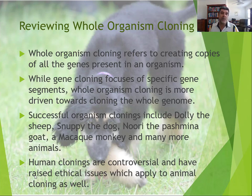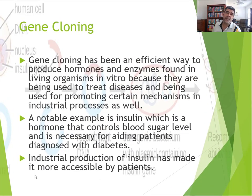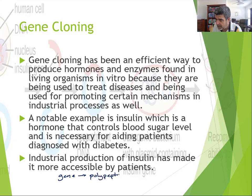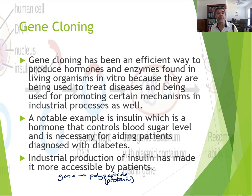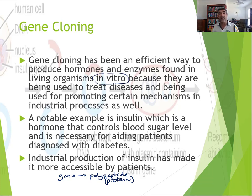In this video, we're going to contrast what we know about whole organism cloning with gene cloning. The difference between the two relates to the relationship between a gene and a polypeptide — or protein — which is what many polypeptides become once they fold into their secondary, tertiary, and sometimes quaternary structures. Gene cloning has been a much more efficient way to produce hormones — insulin in particular — as well as enzymes found in living organisms in vitro, meaning in glass, because they are used to treat diseases and promote mechanisms in industrial processes.